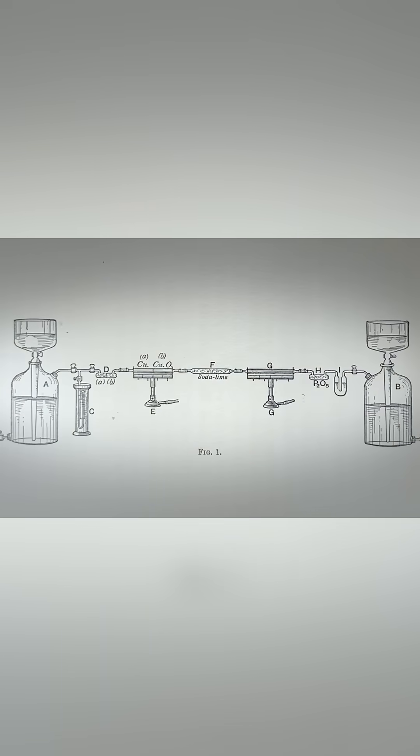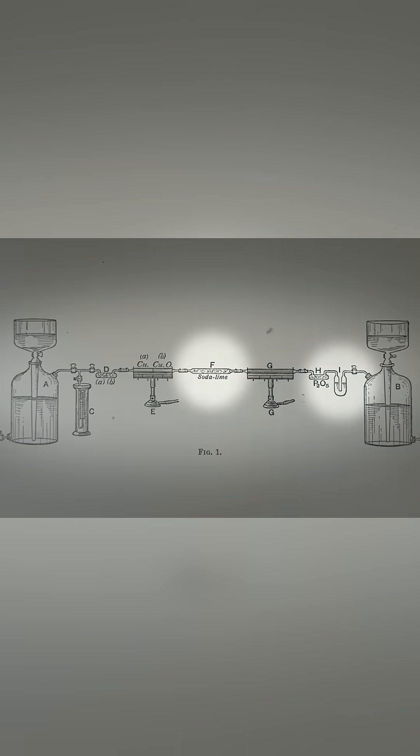The carbon dioxide would then be absorbed in tubes F and I which contained a mixture of soda, or sodium hydroxide, and lime, or calcium oxide.